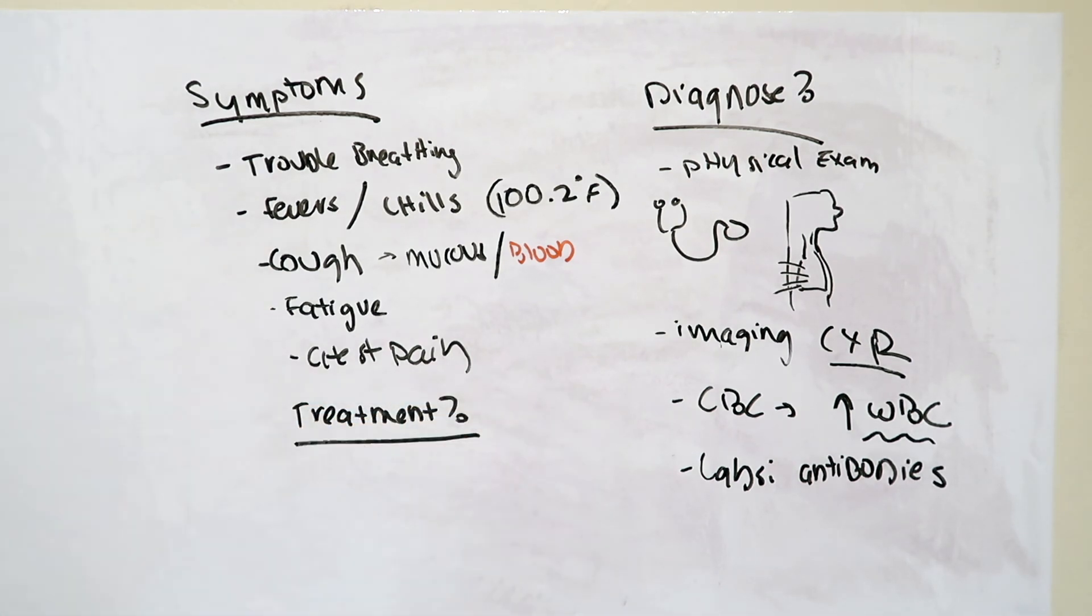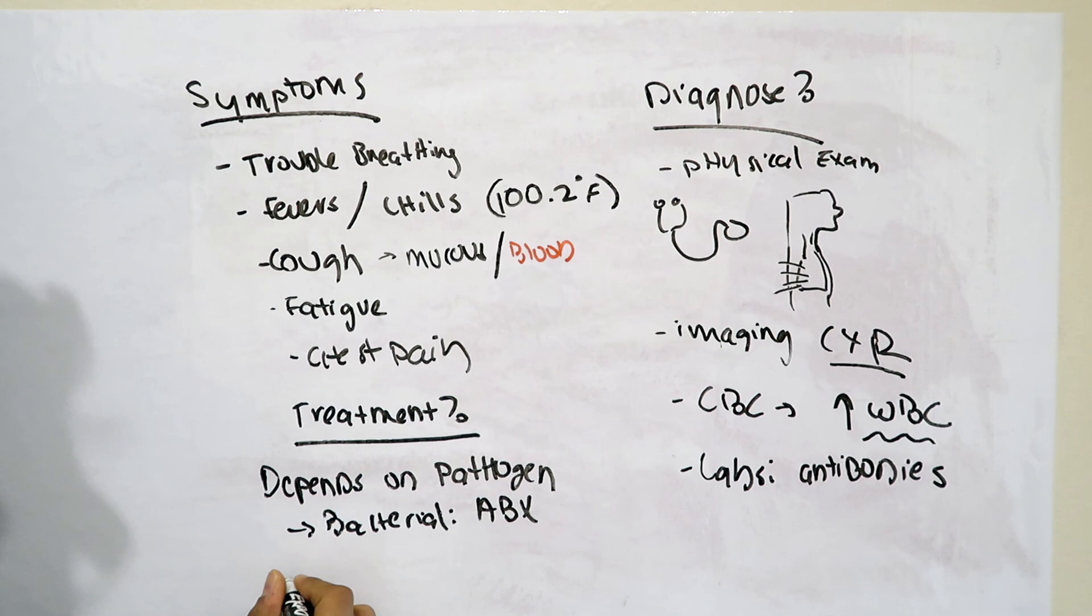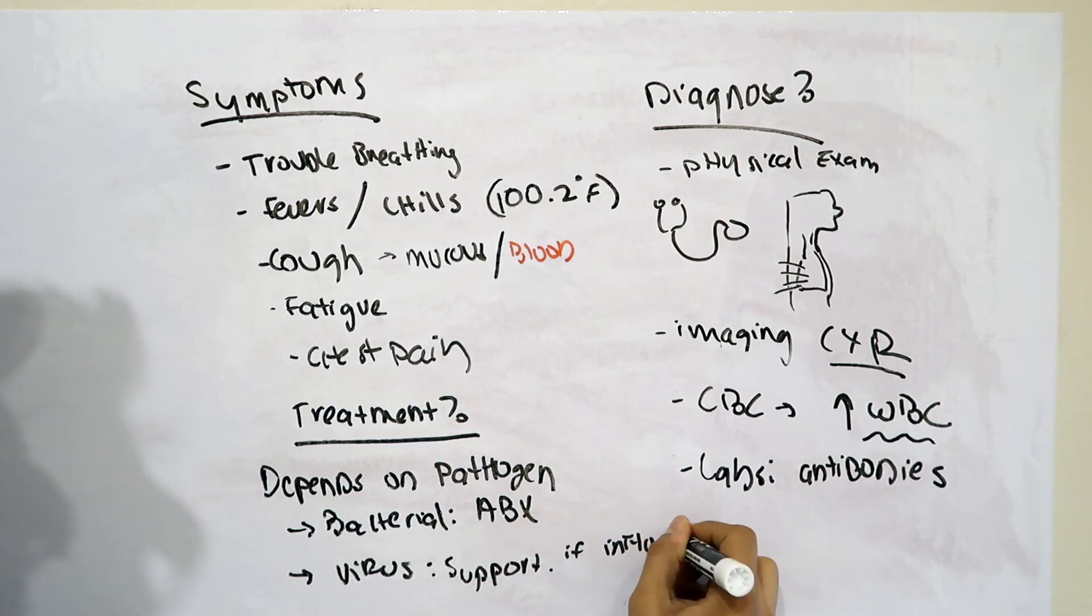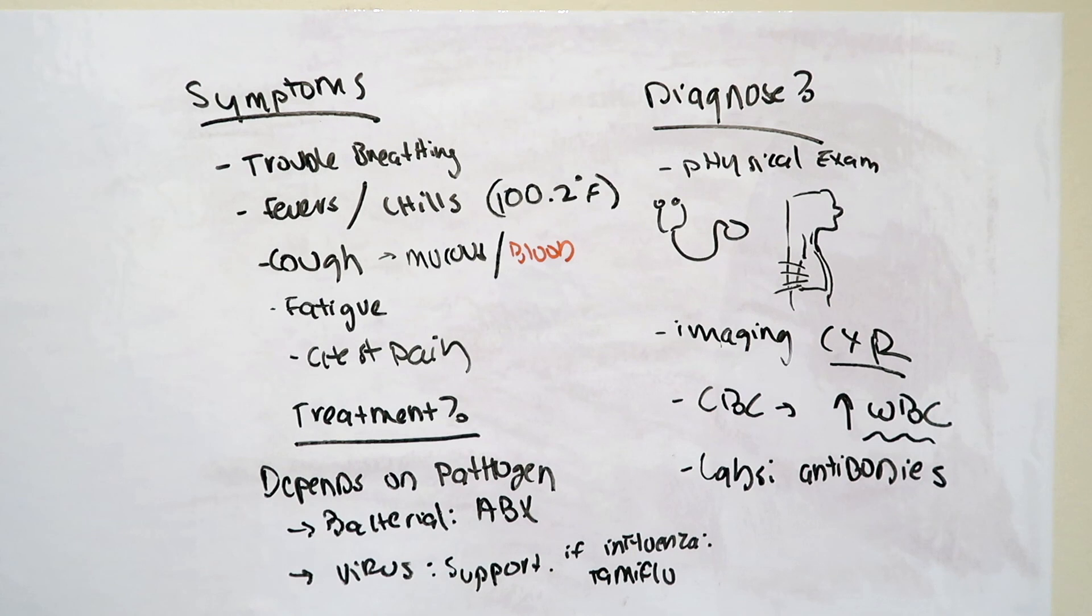So how do you treat a pneumonia? Well, that really depends on the pathogen. If it's a bacterial pneumonia, we can treat with antibiotics. Viruses, however, are a little more complicated. Typically, you're treating the symptoms. However, in certain cases, we actually can treat the virus. For example, if it's influenza, we can try to help the body with Tamiflu in order to slow down the virus's replication.